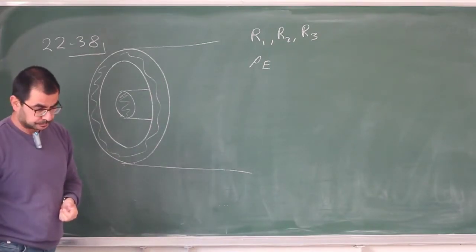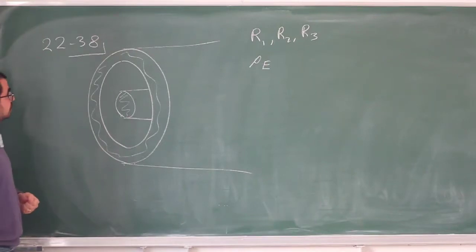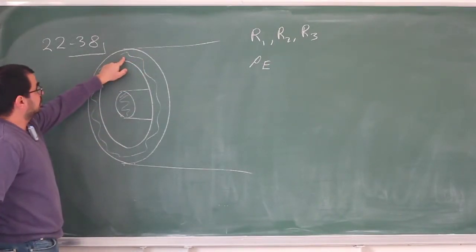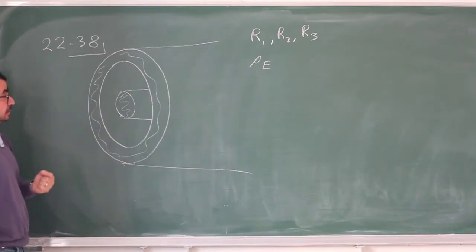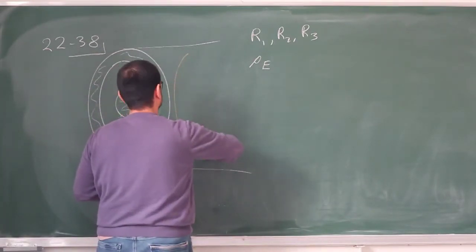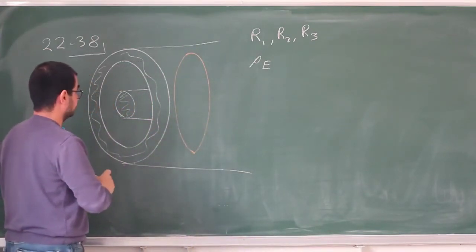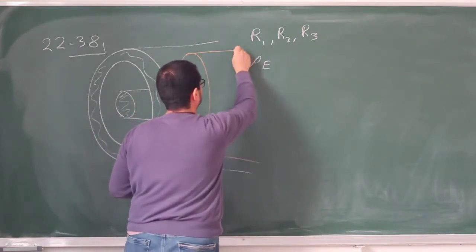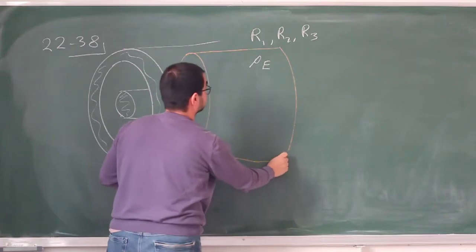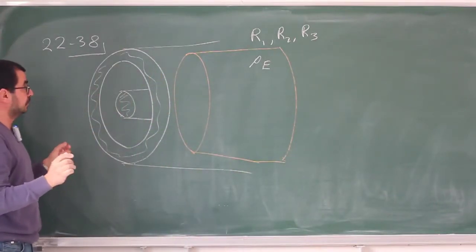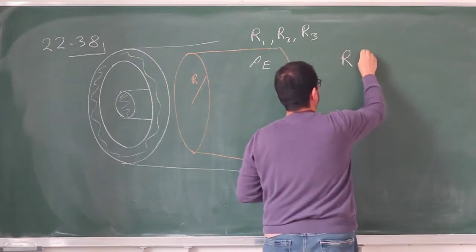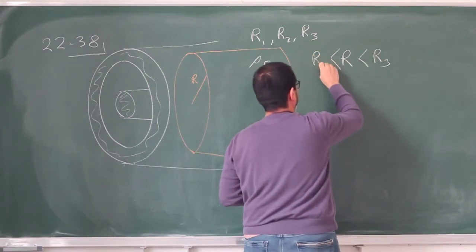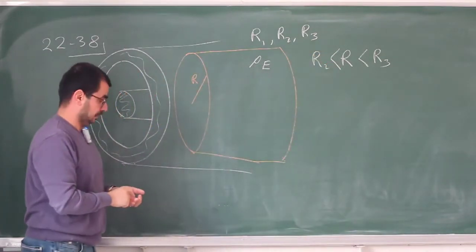Let me choose a region. I'm going to choose a region that's inside the outer cylindrical shell, somewhere between R2 and R3, and calculate the electric field there. I'll draw a hypothetical cylinder — a Gaussian surface — whose axis coincides with the axis of these two cylinders and whose radius lies in that region. I'm far from the edges, so I don't care about edge effects. This is going to be my R, and R is between R2 and R3. I want to calculate the electric field at R.